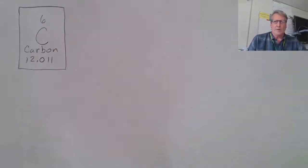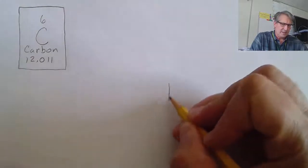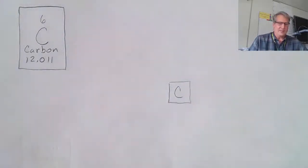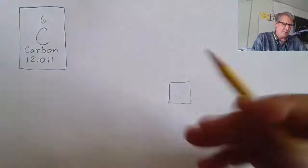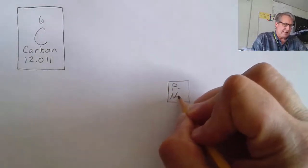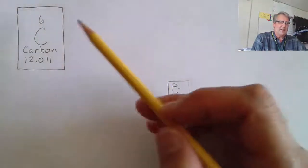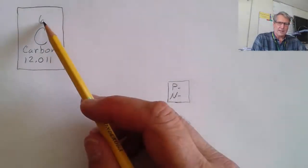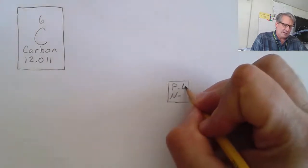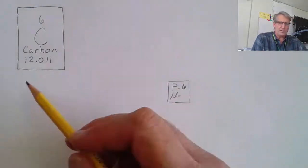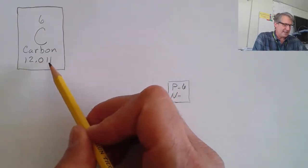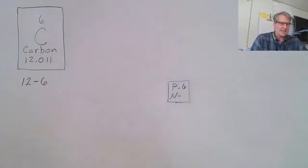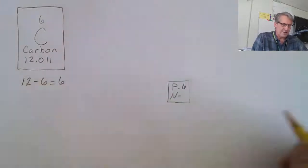Let's start by making a Bohr model for the element carbon. You want to represent the nucleus with a square. Inside that nucleus you can either put the element symbol or list the number of protons and neutrons. Looking at the periodic table, carbon's atomic number is six, so it has six protons. To find the neutrons, round off the atomic mass to 12, then subtract the number of protons — giving us six neutrons.